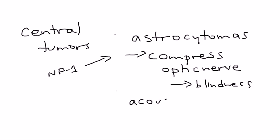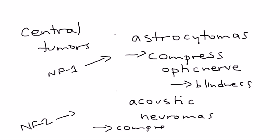The next type of central tumor is very important because it's the primary finding in neurofibromatosis type 2: the acoustic neuroma. It can compress cranial nerve 8 and cause deafness.